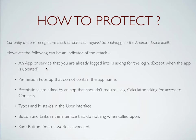Typos and mistakes in the user interface are another way to identify malicious applications — since hackers could be Russian, Chinese, Indian, or other non-native English speakers who make language errors. Buttons and links in the interface that don't do anything when tapped are another indicator. Also, in recent analysis of malicious applications, the back button doesn't seem to work — so if the back button suddenly stops working for a newly downloaded application, it's probably malicious.